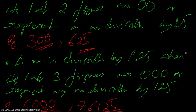So these are the small things you have to take care of to know whether a number is divisible by either 5, 25, or 125.